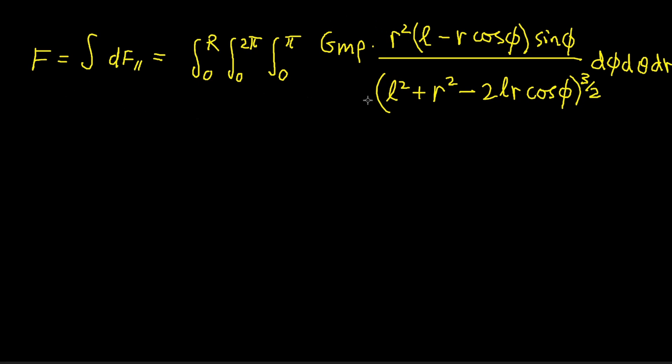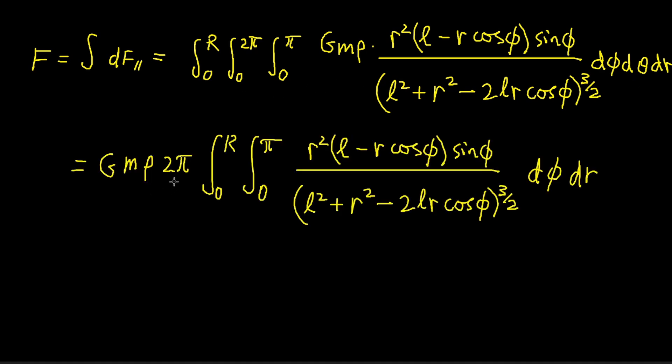Notice that in the integrand, the variable θ is missing. So θ can immediately be integrated. This will result in a factor of 2π at the front, and now we have a double integral to evaluate.